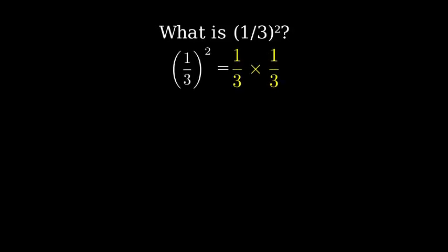When we square a fraction, we multiply it by itself. So one-third squared means we multiply one-third times one-third.